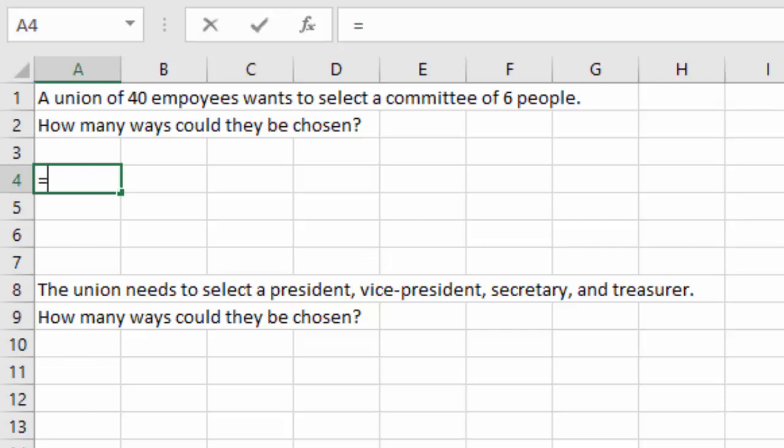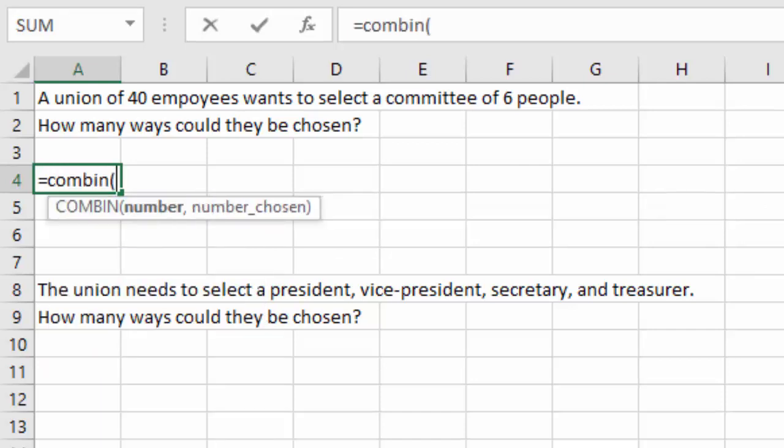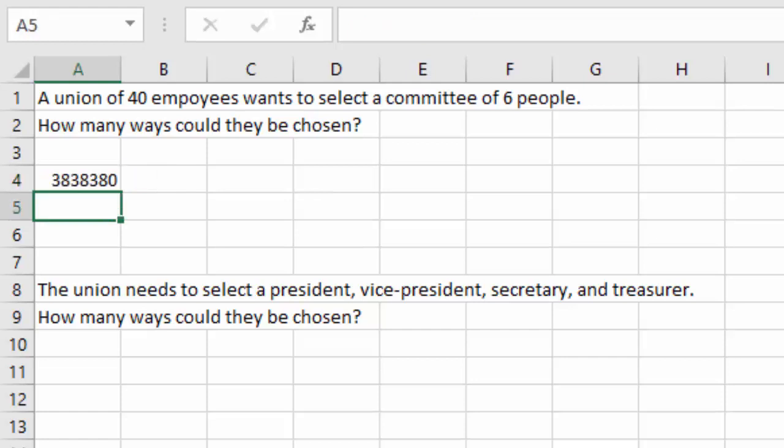So I'll hit equals, COMBIN, open a parenthesis, the number we have as options, 40, comma, we're going to choose 6 of these people. Close the parenthesis, and when I hit enter, we find there are 3,838,380 ways to choose 6 out of 40 people.